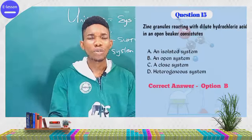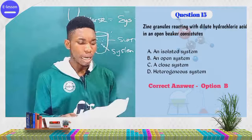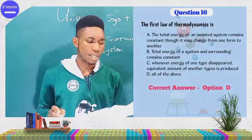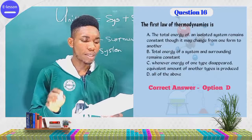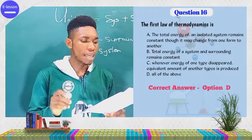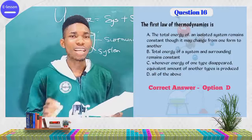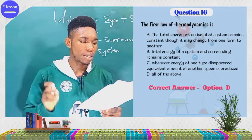The next question: the first law of thermodynamics states that the total energy of an isolated system remains constant, though it may change from one form to another. Also: the total energy of a system and its surroundings remains constant. And: whenever energy of one type disappears, an equivalent amount of another type is produced. All of these are correct, so the answer is option D: all of the above.